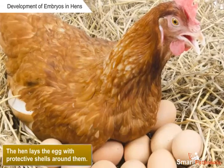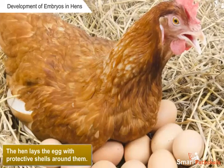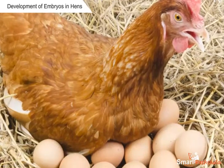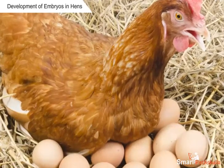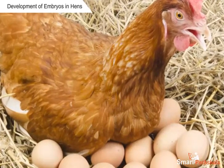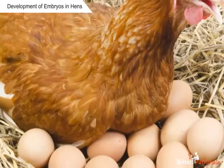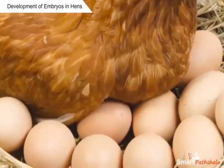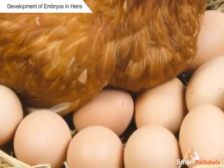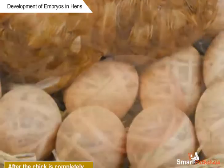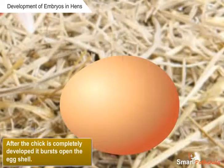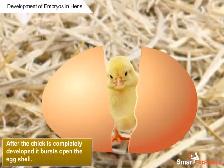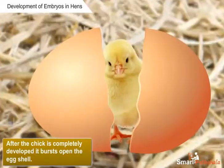The hen lays the egg with protective shells around them. These eggs or embryos will develop into a chick within 3 weeks. The hen will provide sufficient heat for the development of eggs by sitting on them. After the chick is completely developed, it bursts open the egg shell.